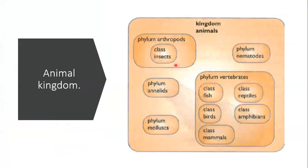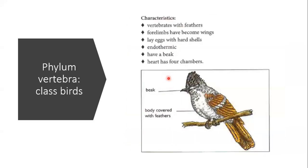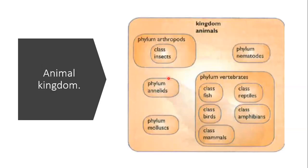Inside each phylum we can have multiple classes. You don't have to worry about the classes for nematodes, annelids, or mollusks. The focus here is phylum vertebrates — you will need to know what classes are found inside phylum vertebrates. Let's start with phylum vertebrates because it's the largest.